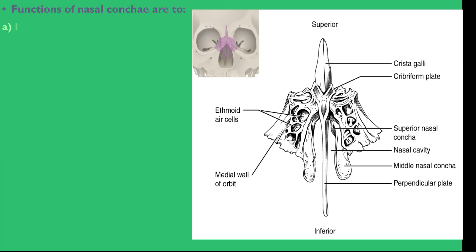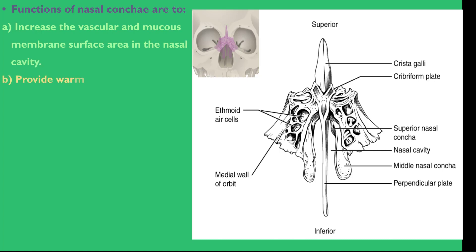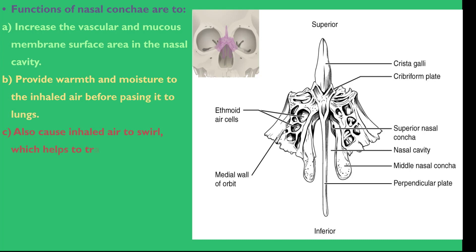The functions of the nasal conchae are: firstly, to increase the vascular and mucous membrane surface area in the nasal cavity; to provide warmth and moisture to inhaled air before passing it to the lungs; and lastly, to cause inhaled air to swirl, which helps trap inhaled particles in the mucous membrane of the nasal cavity, allowing cleansing of the air prior to its passage to the lungs.